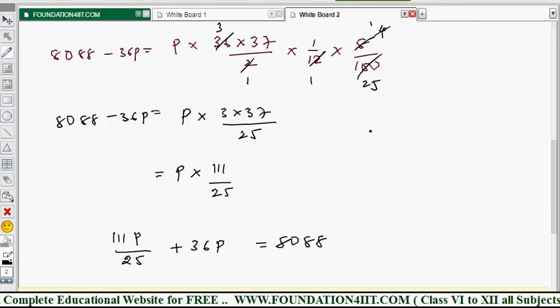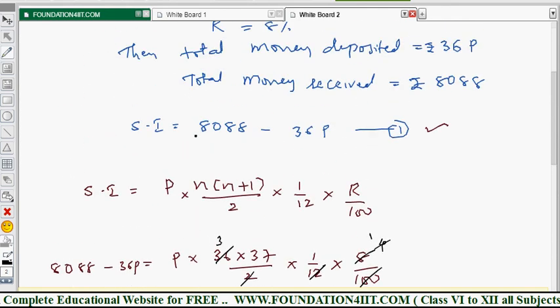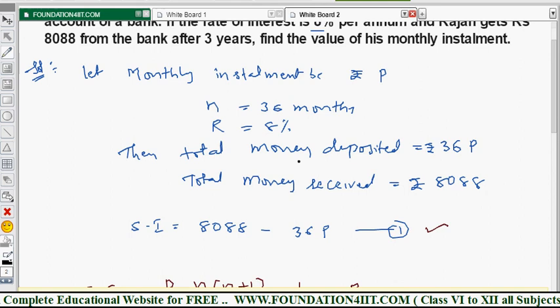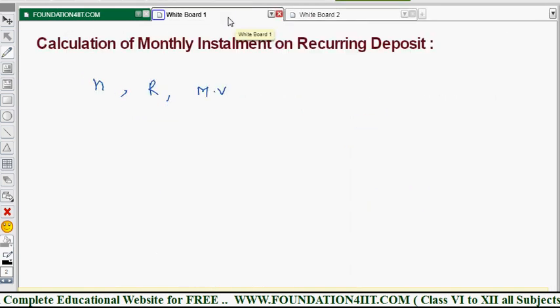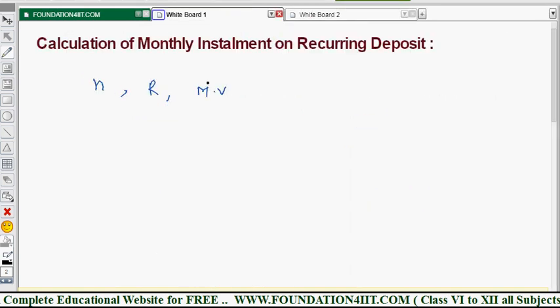So based on this, we can find out like this. Whenever the values are given, you should find out the simple interest first, then applying that formula you will get these values. So this is how to find out the monthly installment. And I will show one problem on how to calculate the time period. How to find out the N value. Let us see one sum now.